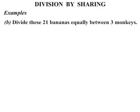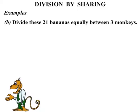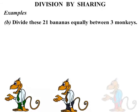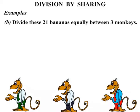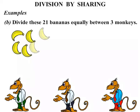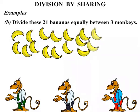The next one: divide these 21 bananas equally between 3 monkeys. Well there's our 3 monkeys but where are the bananas? We need 21 of them. Here we go. 2, 4, 6, 8, 10, 12, 14, 16, 18, 20, 21.